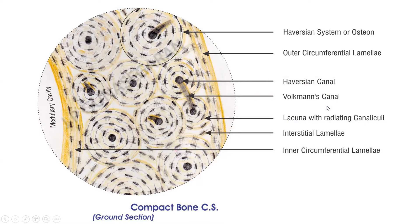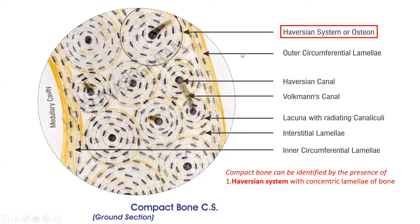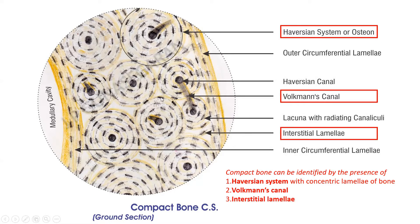This is a drawing of an unstained section of compact bone and can be identified by the presence of Haversian systems or the osteon with concentric lamellae of bone, Volkmann's canal connecting adjacent Haversian canals, the interstitial lamellae occupying the interval between Haversian systems, and elliptical lacunae with radiating canaliculi.